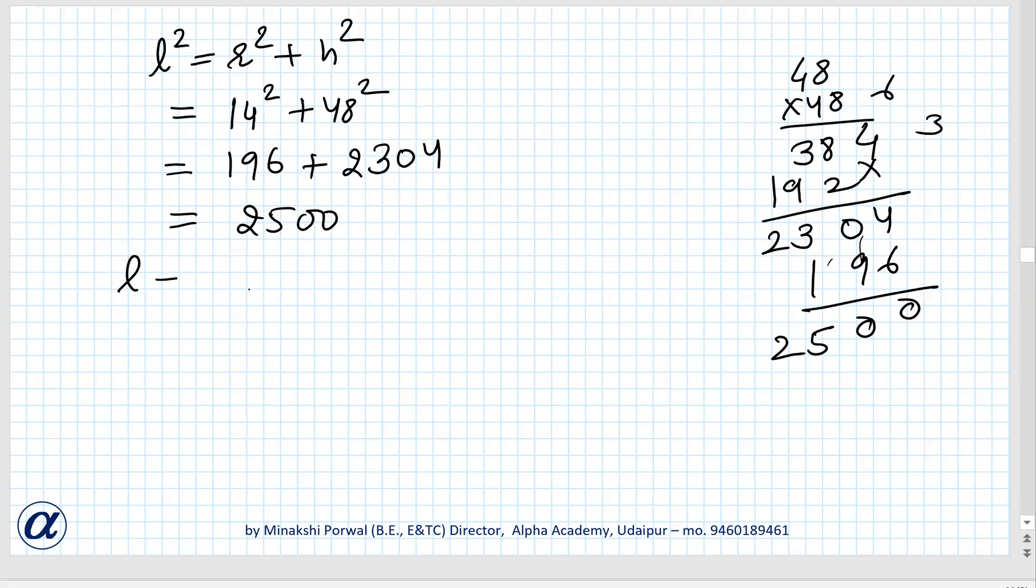So slant height is square root of 2500. Square root of 25 is 5 and square root of 100 is 10, so it is 50. So l is 50 cm.